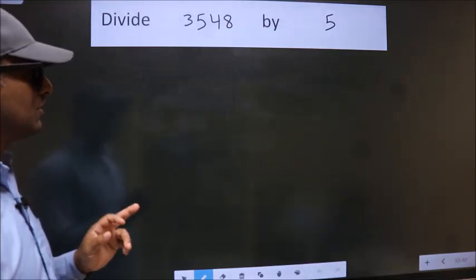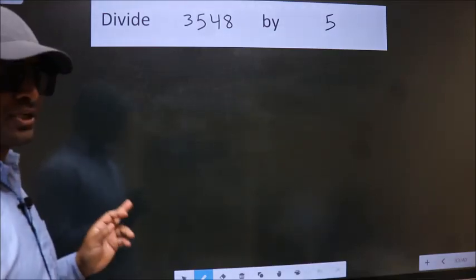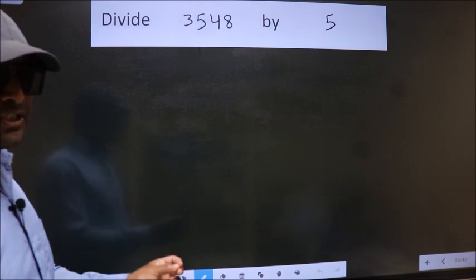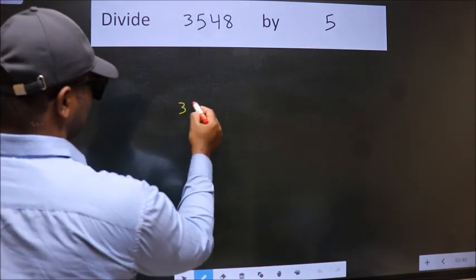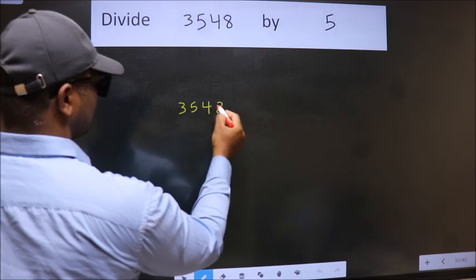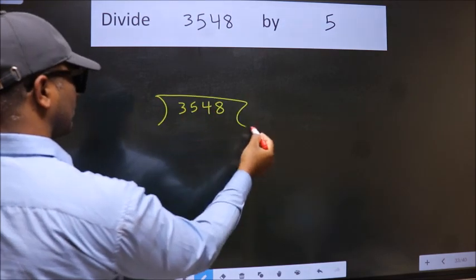Divide 3548 by 5. To do this division, we should frame it in this way. 3548 here, 5 here.